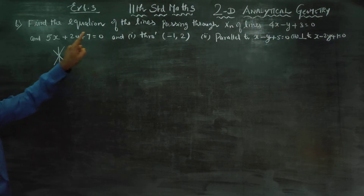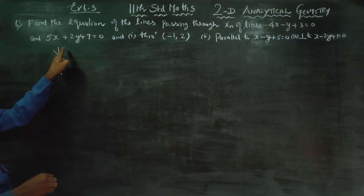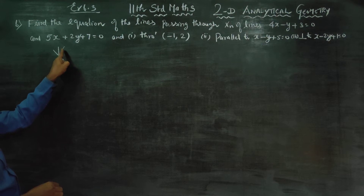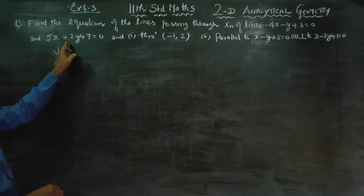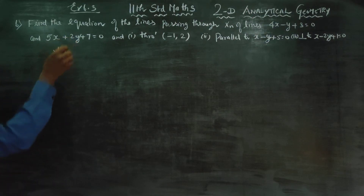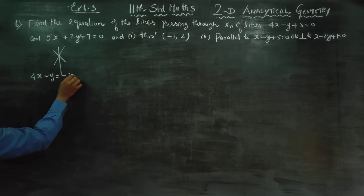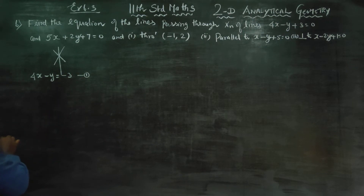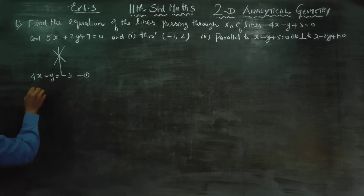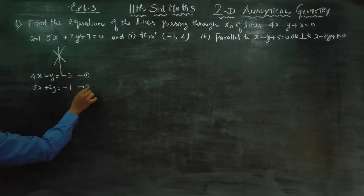In the two equations, this is one line and this is another line. My first equation is 4x minus y is equal to plus 3 — this is equation number 1, line number 1. Line number 2: 5x plus 2y is equal to minus 7. This is line 2.